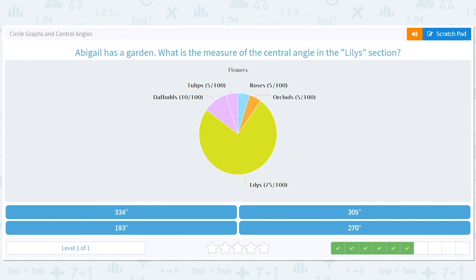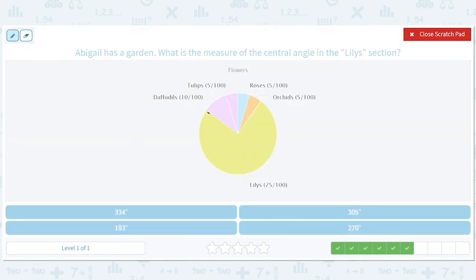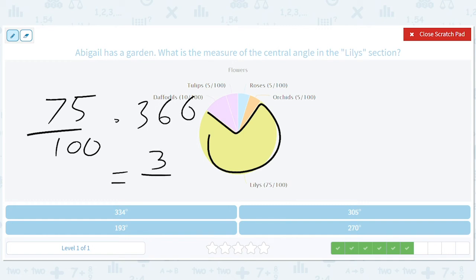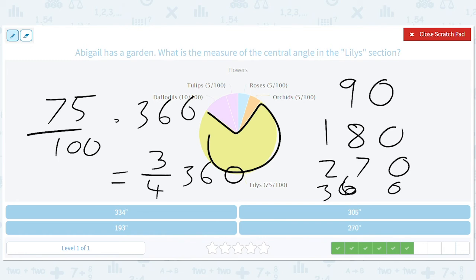Central angle of the lily section. You know what? We'll take 75%. I like 75%. 75% is just three-fourths. Three out of four times 360. And, you know, I think it's worthwhile knowing what a fourth of 360 is. It's 90. So 90, 180, 270, right? 360. That's if you broke it up into fourths. And so we're at three-fourths, so we're at 270.